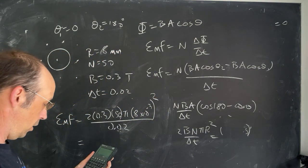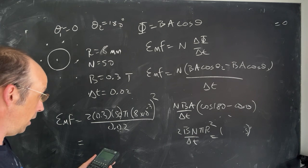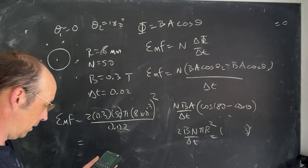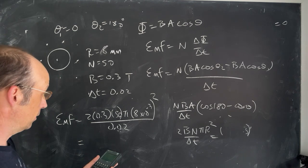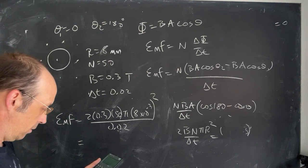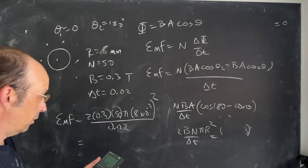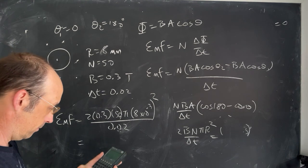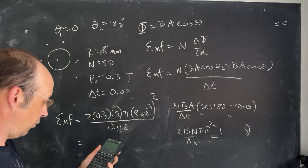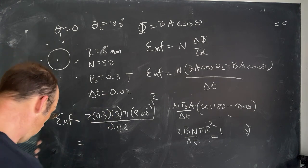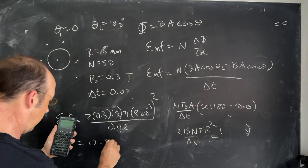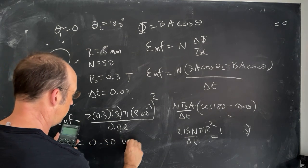Ok, 2 times 0.3 times 50 times pi times 8 times 10 to the negative third, enter, squared, times, and then 0.02 divided by, and I get, oh, not too bad, 0.30 volts.